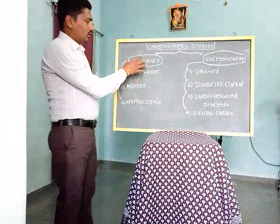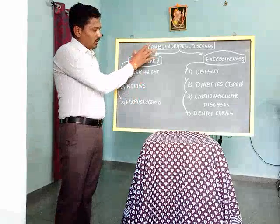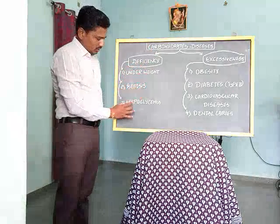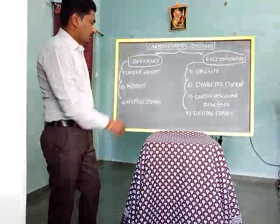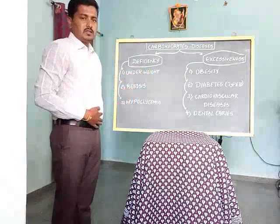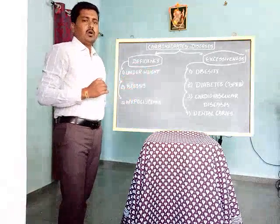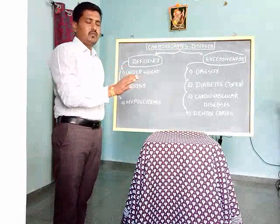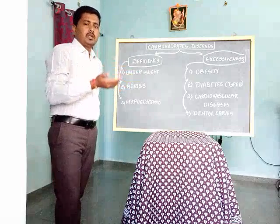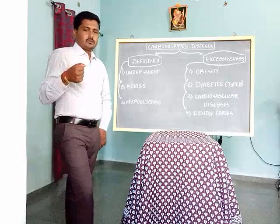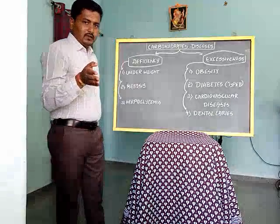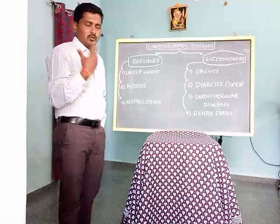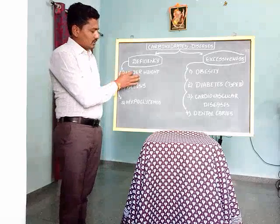The deficiency disorders related to carbohydrate are: first, underweight; second, ketosis; third, hypoglycemia. Underweight means if the BMI is less than 18.5, that person is considered undernourished or underweight. Those persons are at more risk of infection, nutrition-related respiratory infections, communicable diseases, and several other problems.